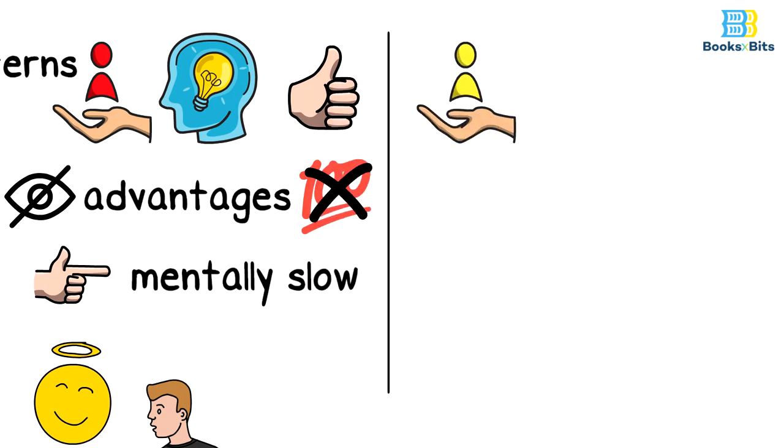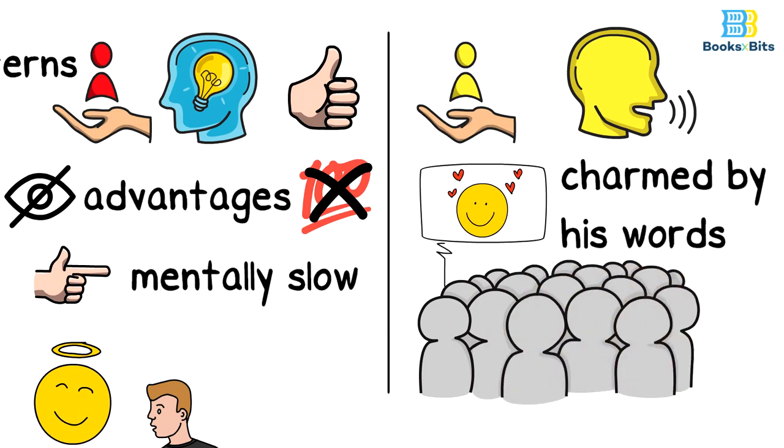As for the yellow person, he is smarter in terms of his ability to speak, and people are often impressed and charmed by his words.